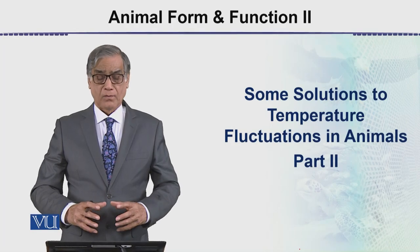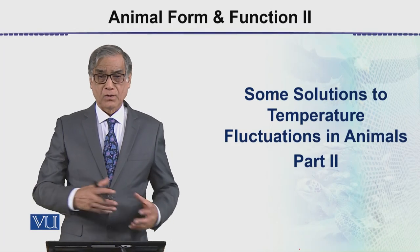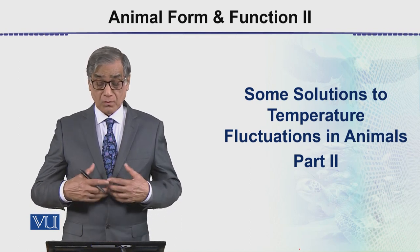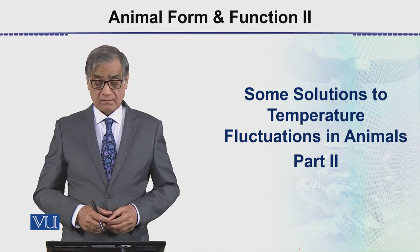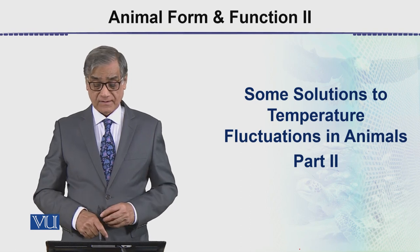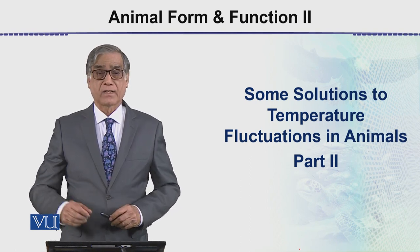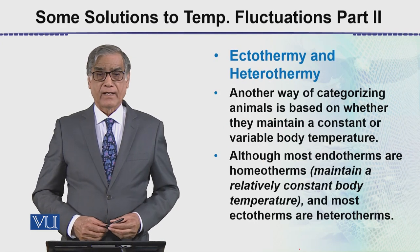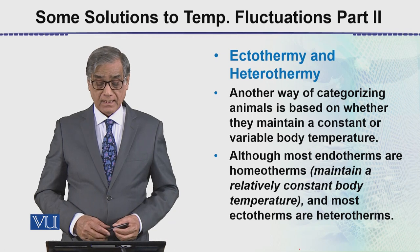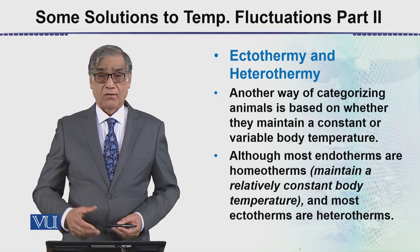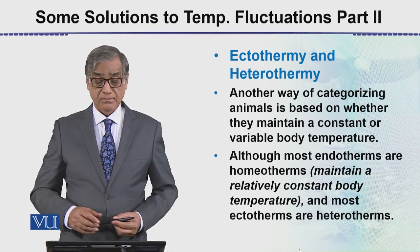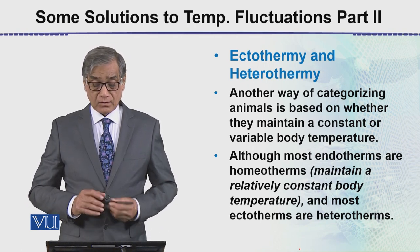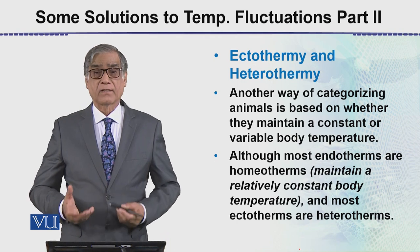In this module, we explain another way of categorizing animals — based on whether they maintain a constant or variable body temperature. In the previous module, some solutions were discussed for how animals survive in a fluctuating environment.